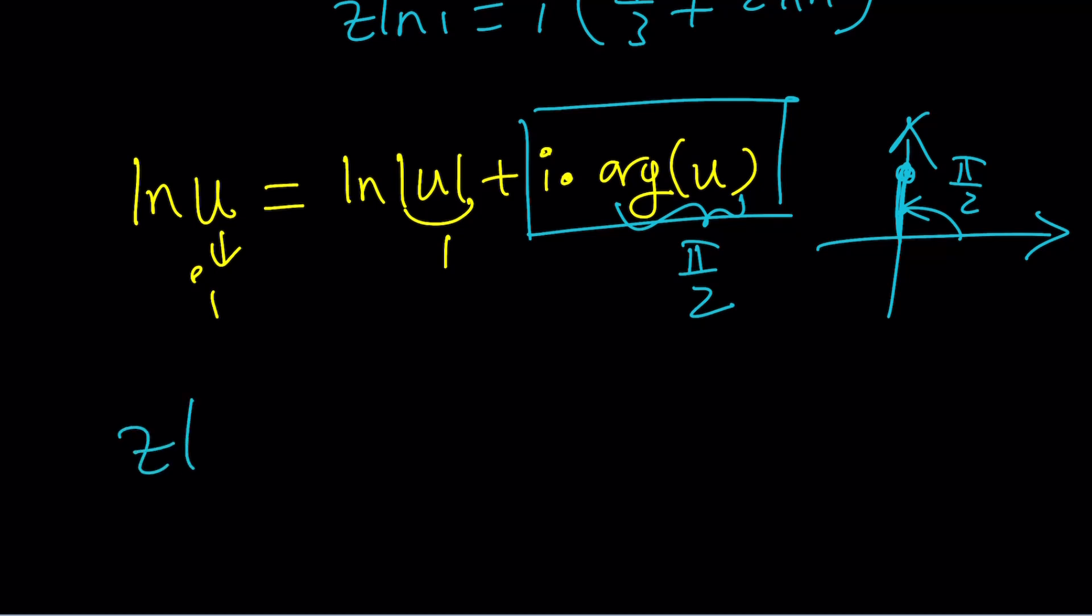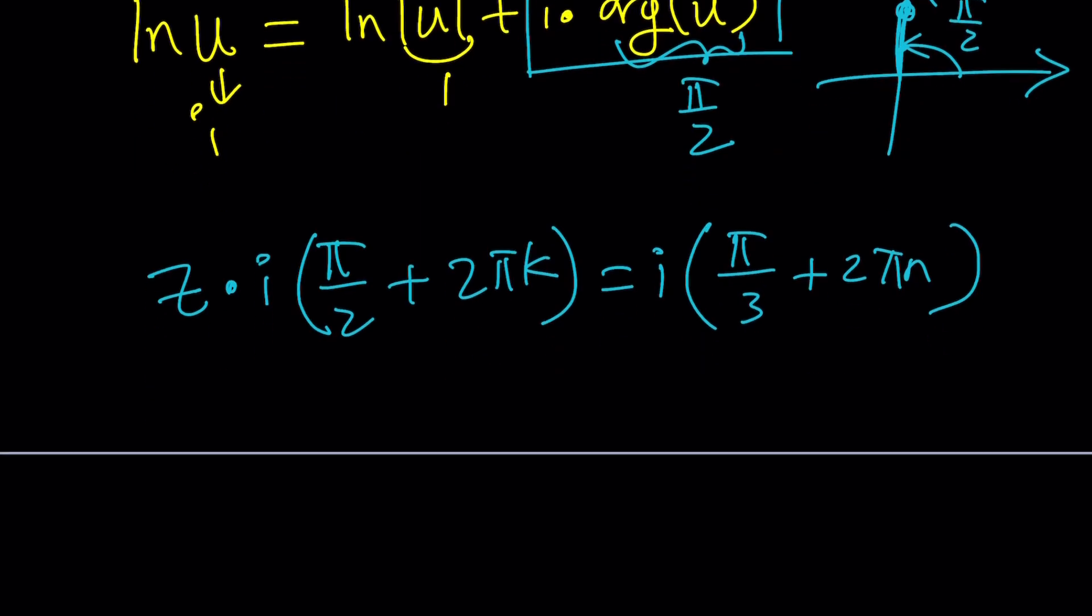In this case, the argument of u would be pi over 2. So ln i could be replaced with i pi over 2. But the problem with that is, we still have to consider all possibilities, because ln i is multi-valued. So let me do this. Instead of just writing it as i pi over 2, let me write it as i times pi over 2 plus 2 pi k. Let's use the general form, and then we can replace k with 0 if we want the principal value.